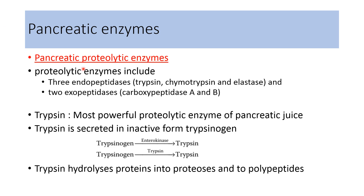Pancreatic proteolytic enzymes include 3 endopeptidases and 2 exopeptidases. Endopeptidases are trypsin, chymotrypsin, and elastase; exopeptidases are carboxypeptidase A and B. Trypsin is the most powerful proteolytic enzyme of pancreatic juice and is secreted in the inactive form, trypsinogen. Trypsinogen is converted to trypsin in the presence of the enzyme enterokinase. Trypsin itself can also activate formation of trypsin from trypsinogen — this is known as the autocatalytic action of trypsin. Trypsin hydrolyzes proteins into proteases and polypeptides.